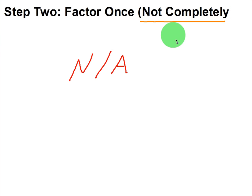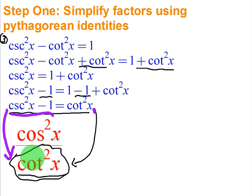Step two, we do want to follow this algorithm just in case. It says to factor once, not completely. And that's if it's possible, but it's just one single fraction. So there's really nothing to factor, which means we're going to go on and move on to step three.